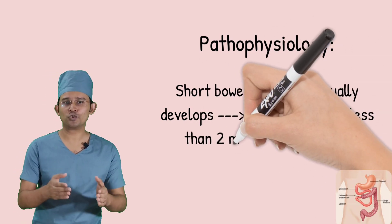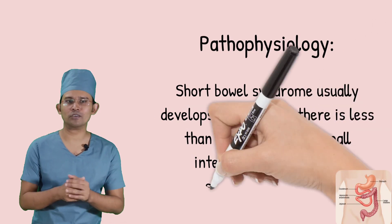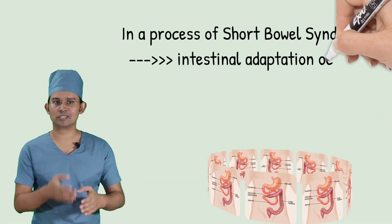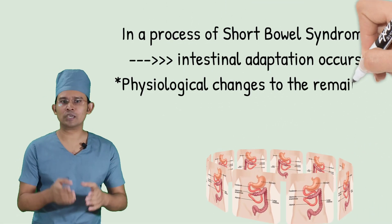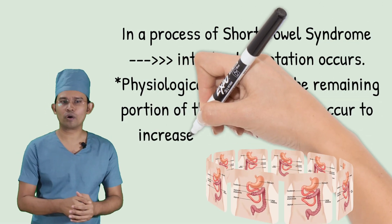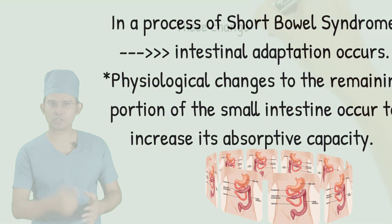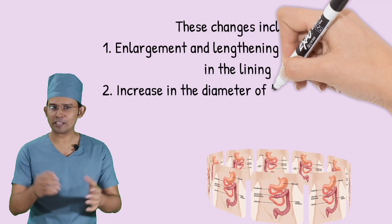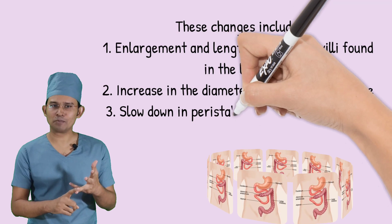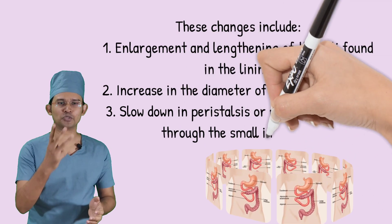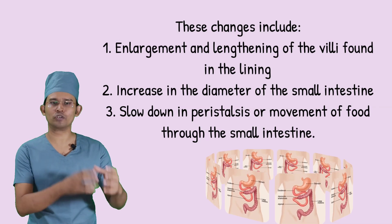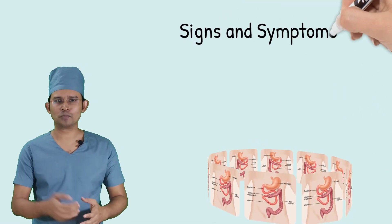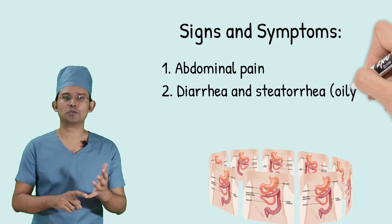The pathophysiology of Short Bowel Syndrome typically develops when there is less than two meters of small intestine remaining to absorb sufficient nutrients. A process called intestinal adaptation occurs, in which physiological changes to the remaining portion of the small intestine increase its absorptive capacity. These changes include enlargement and lengthening of the villi, increase in the diameter of the small intestine, and slowing down of peristalsis — movement of food through the small intestine.